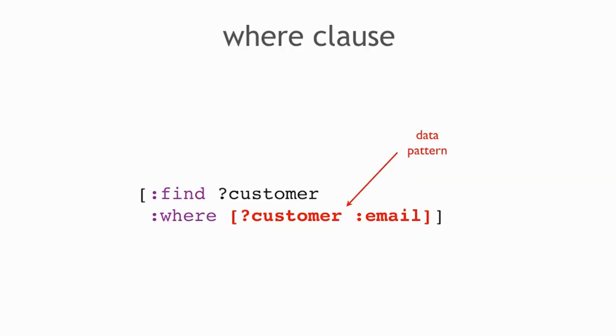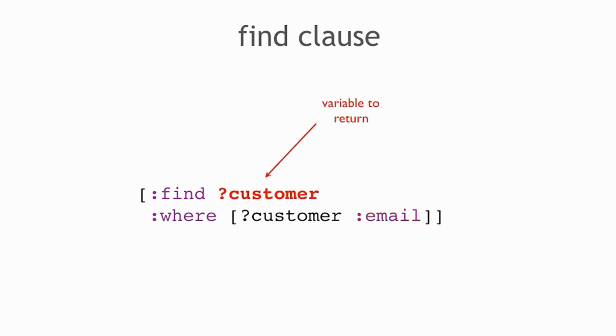That data pattern appears in a where clause, and you use a find clause to say which variables you want to return. This looks degenerate when there's only one variable, but in queries with more than one variable you have choices. The things that come back are sets of tuples, and the find clause specifies the order variables appear in results. You might also not return all variables — for example, if you only need a subset.